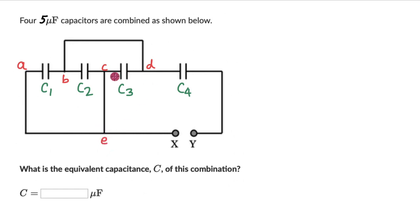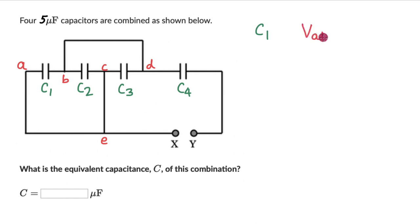Now our strategy would be to identify sets of capacitors which are in series or parallel, because we know how to calculate the equivalent capacitance of capacitors in series and parallel. So first, let's try and understand the potential difference across C1. Across C1, the potential difference is VAB. Across C2, this would be VBC.